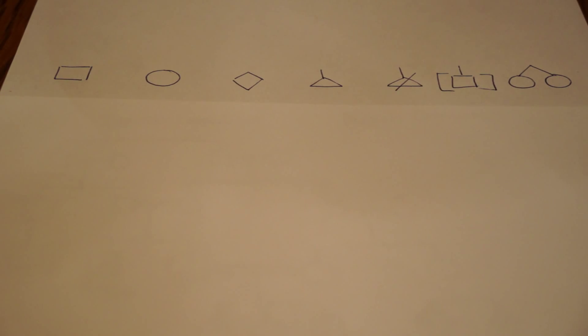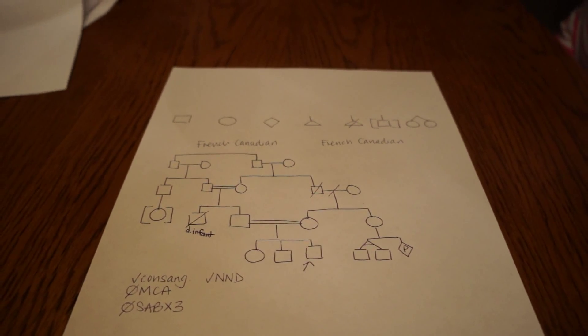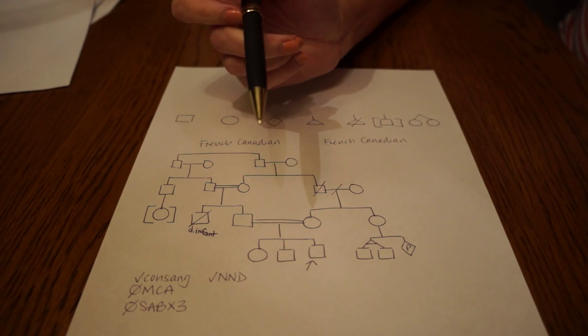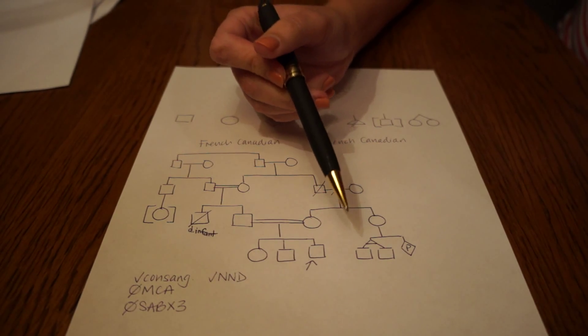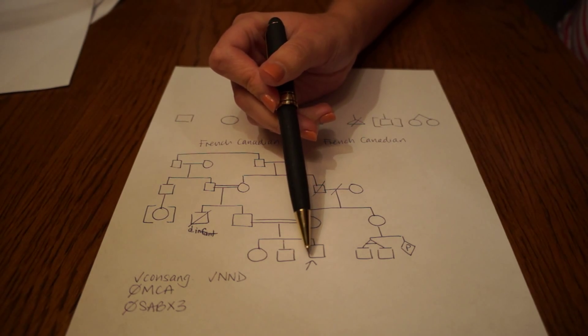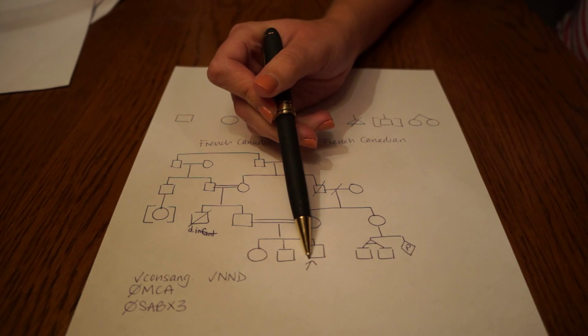Let's review the pedigree from our case. Let's start first with our proband. We know that this person is the proband because they have the arrow pointing towards them.